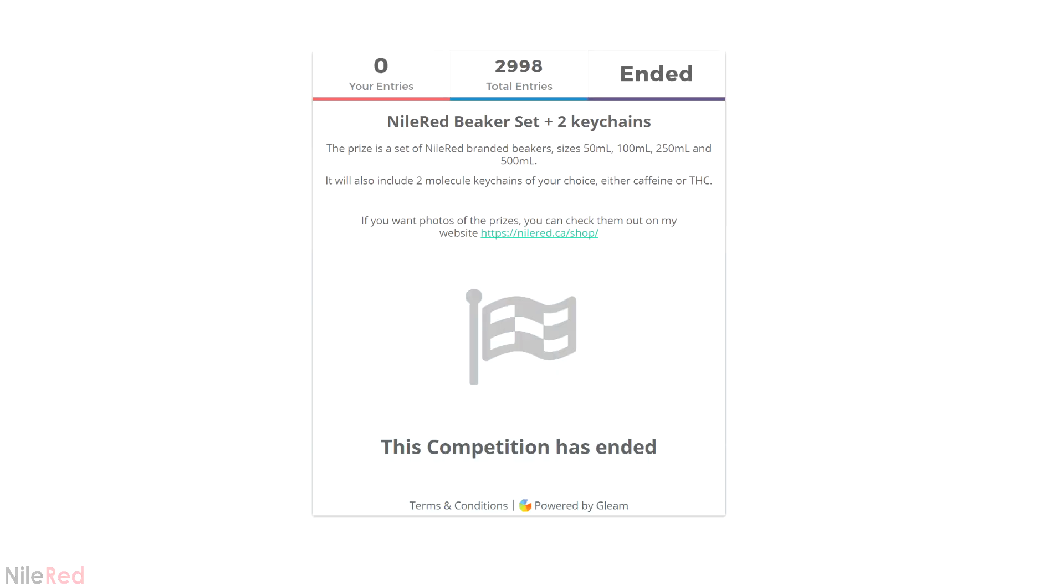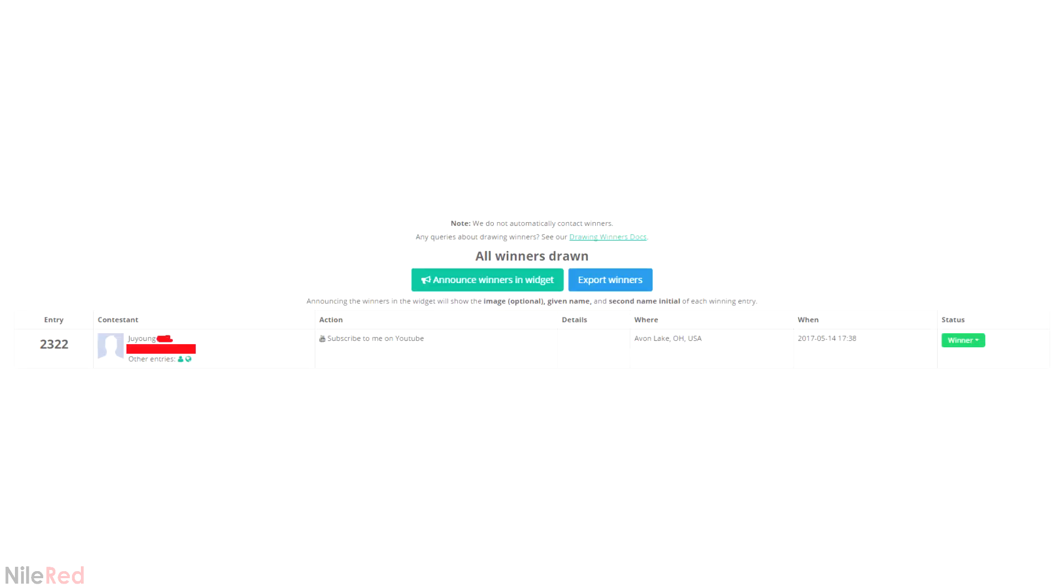I ran a giveaway in the last video and now it's time to say who won. So the way that it works is the website randomly generates a number which corresponds to one of the entries. When I did this, I got the number 2322, so the winner is Joo Young from Ohio. Anyway, in general this giveaway was pretty successful and I'm thinking of maybe doing it once a month.